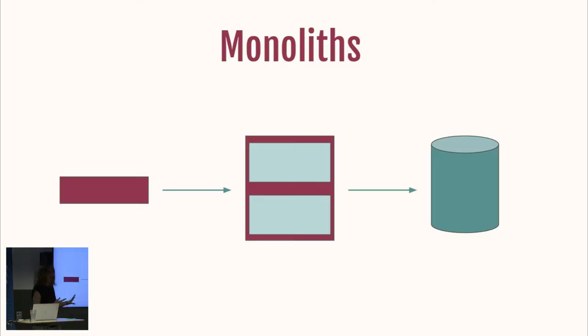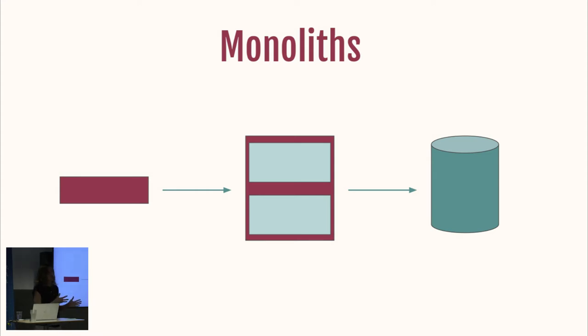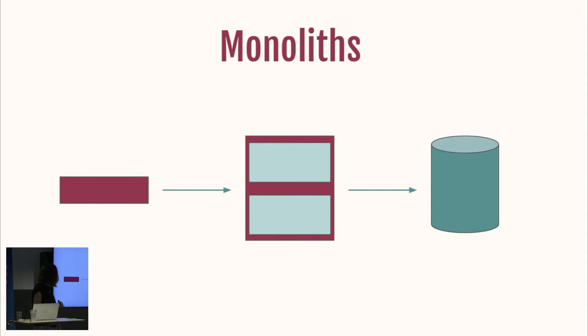But I think the main difference between observability and the rest of those words is that observability is a little bit of a consequence of the rest, and I'm going to explain why with a little bit of history. Not long ago, this is how we built all of our applications — the famous monolith, where you have all the logic in one chunk and a database where you store your state.